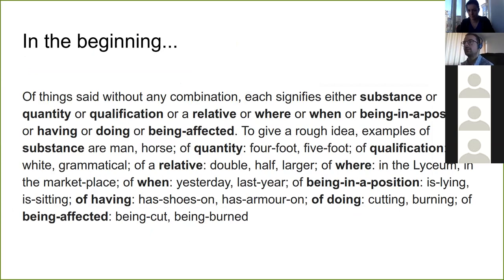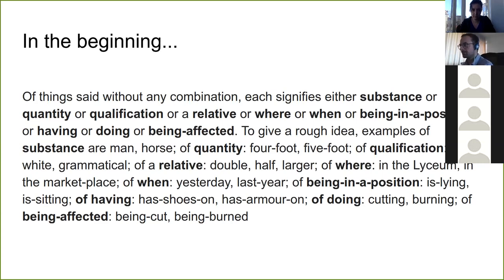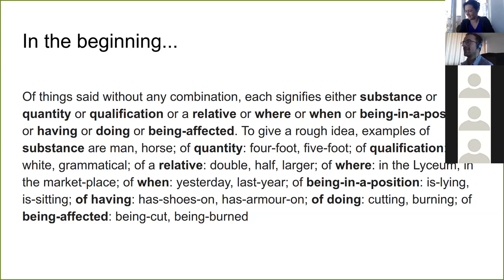A great way of jumping right into knowledge representation is this ancient writing: 'Of things said without any combination, it signifies either substance or quantity or qualification or a relative or where or when or being in a position or having or doing or being affected.' Examples of substance are man, horse; of quantity, four foot, five foot; of qualification, white, grammatical. This seems like an ontological model of the world — a classification of all ideas.